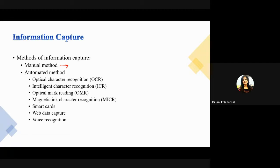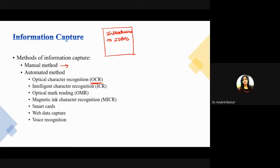Now let's talk about automatic methods. One is Optical Character Recognition (OCR). If you take a screenshot of a slide, will you be able to select the text from that image? No — it is just considered as an image. You will not be able to search for text within it, even if you have many screenshots in your gallery.